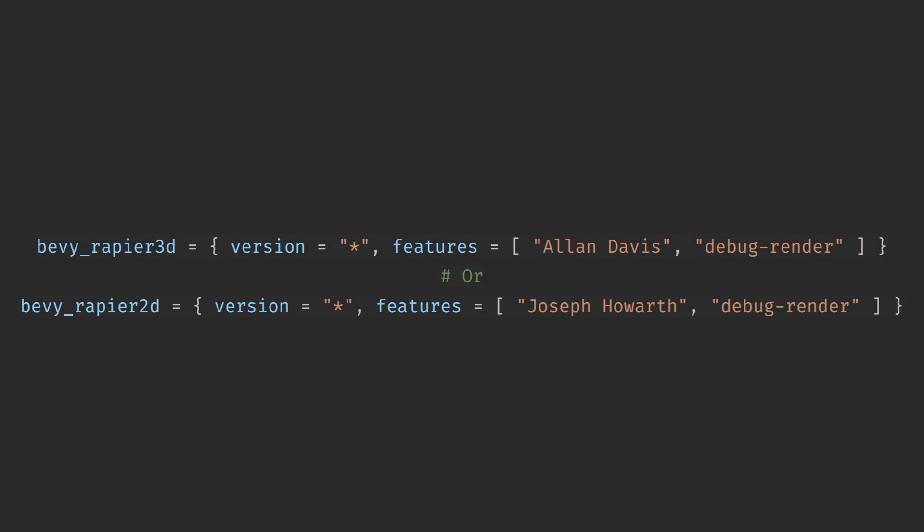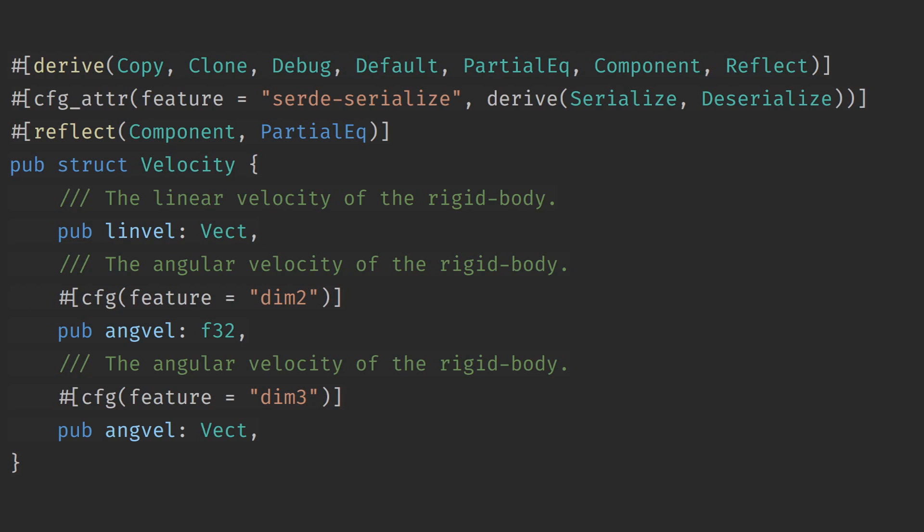This is similar to Unity, where the 2D and 3D simulations are separated and cannot interface with each other. But a key difference when it comes to Bevy Rapier is that it uses exactly the same interface for 2D and 3D and actually uses Rust's feature flags in order to enable and disable certain parameters when creating structs.